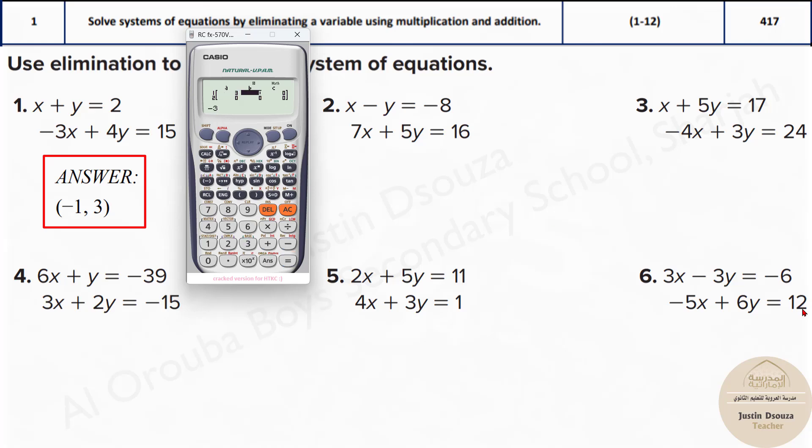Don't forget the signs. It's minus 3 and minus 6, then we have minus 5, 6, and lastly 12. The answers are 0 and 2.